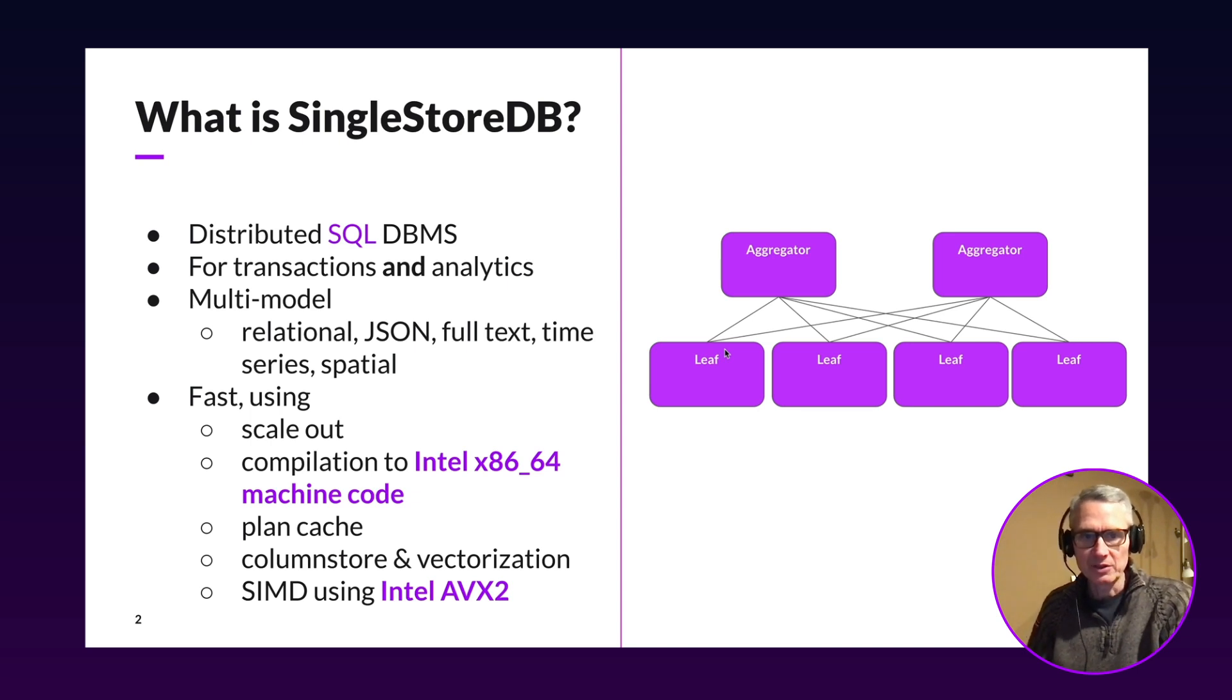We compile queries to Intel machine code, unlike other systems who interpret their queries, which gives us up to like a factor of 10 performance improvement. And we have a good plan cache, which allows us to compile plans and then retrieve the compiled plans and run them quickly when the query comes in that we've seen before. We also support columnar and vectorized query execution for speed.